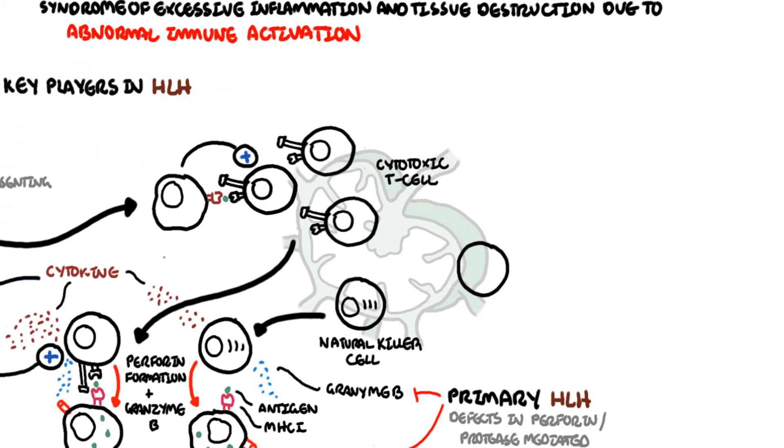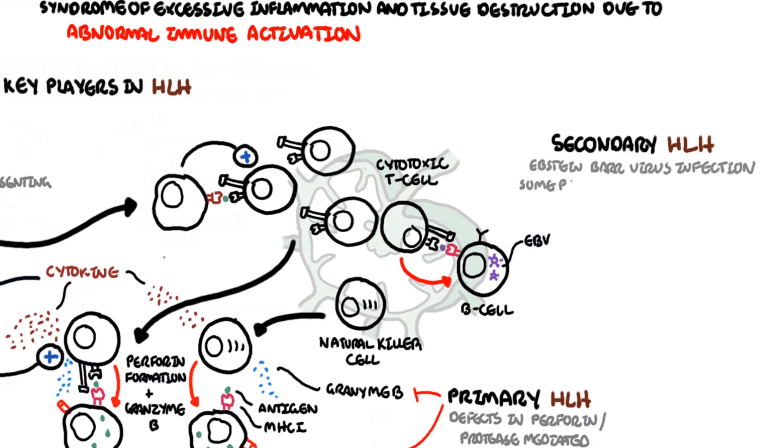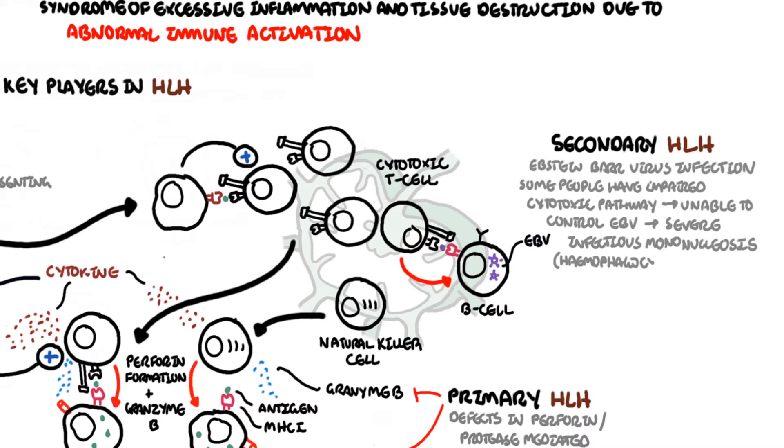In Epstein-Barr virus infections, these guys normally reside in B-cells and can hide within them, staying dormant. Cytotoxic T-lymphocytes will screen and destroy infective cells, such as the B-cells, if they can identify the foreign Epstein-Barr virus. With Epstein-Barr virus infections, some people have impaired cytotoxic pathways and are unable to control the infection, thus resulting in cytokine release by the cytotoxic T-lymphocytes, resulting in severe infectious mononucleosis, which can eventually lead to hemophagocytic lymphohistocytosis.